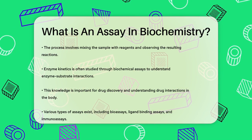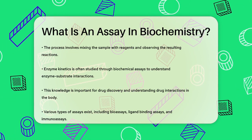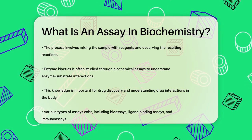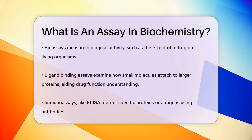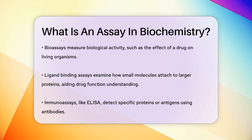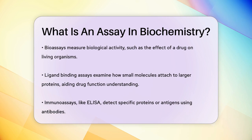There are various types of assays, such as bioassays, ligand binding assays, and immunoassays. Bioassays involve measuring biological activity, like how a drug affects a living organism or a part of it. Ligand binding assays focus on how small molecules bind to larger proteins, which is important for understanding how drugs work.